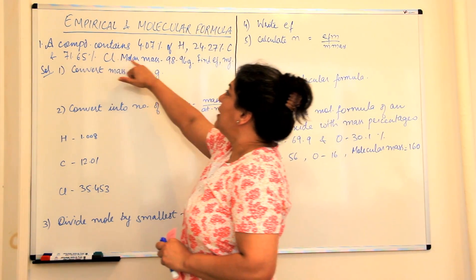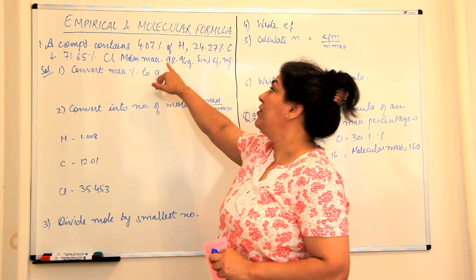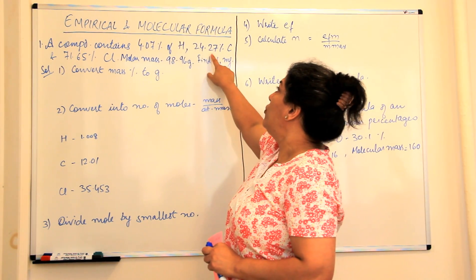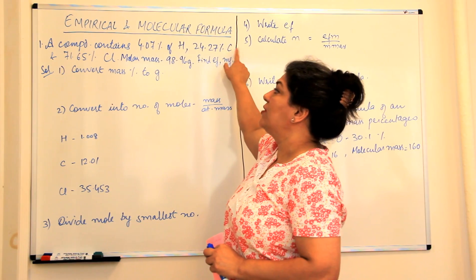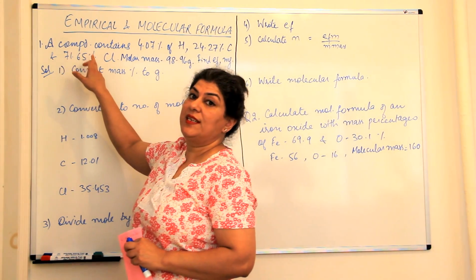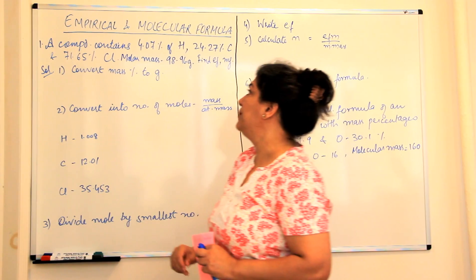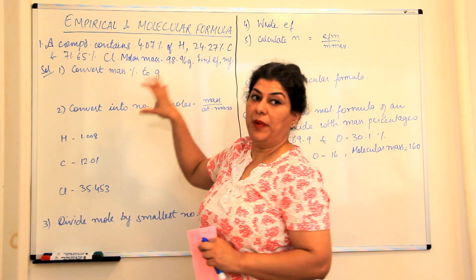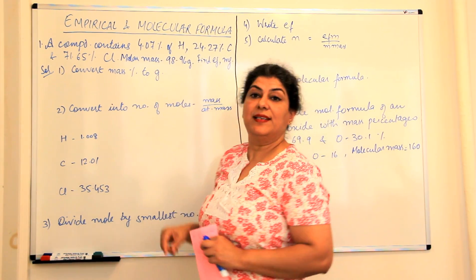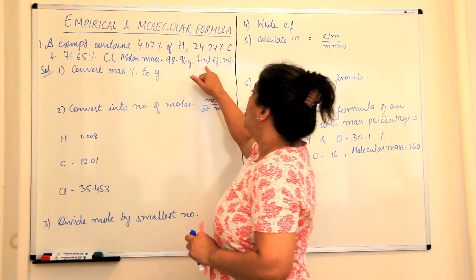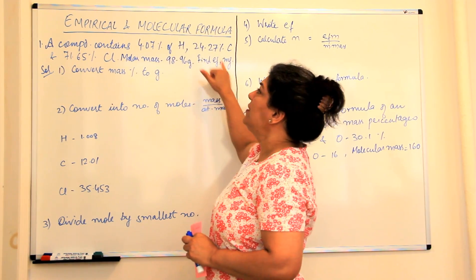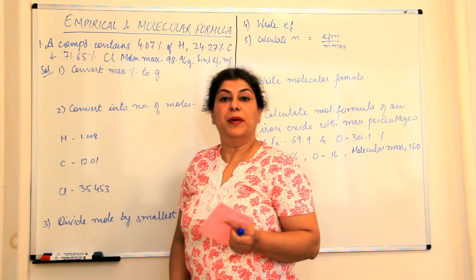A compound contains 4.07% of hydrogen, 24.27% of carbon, and 71.65% of chlorine. The molar mass of the compound is given to us, which is 98.96 grams. You have to find out the empirical formula and the molecular formula of the compound.